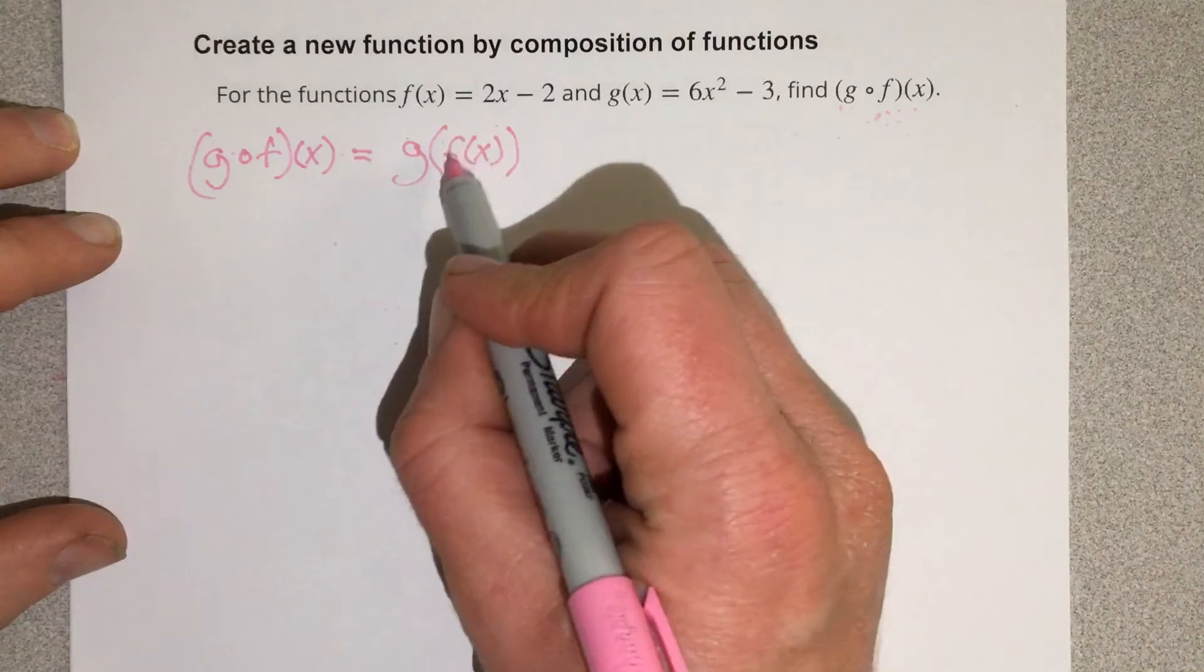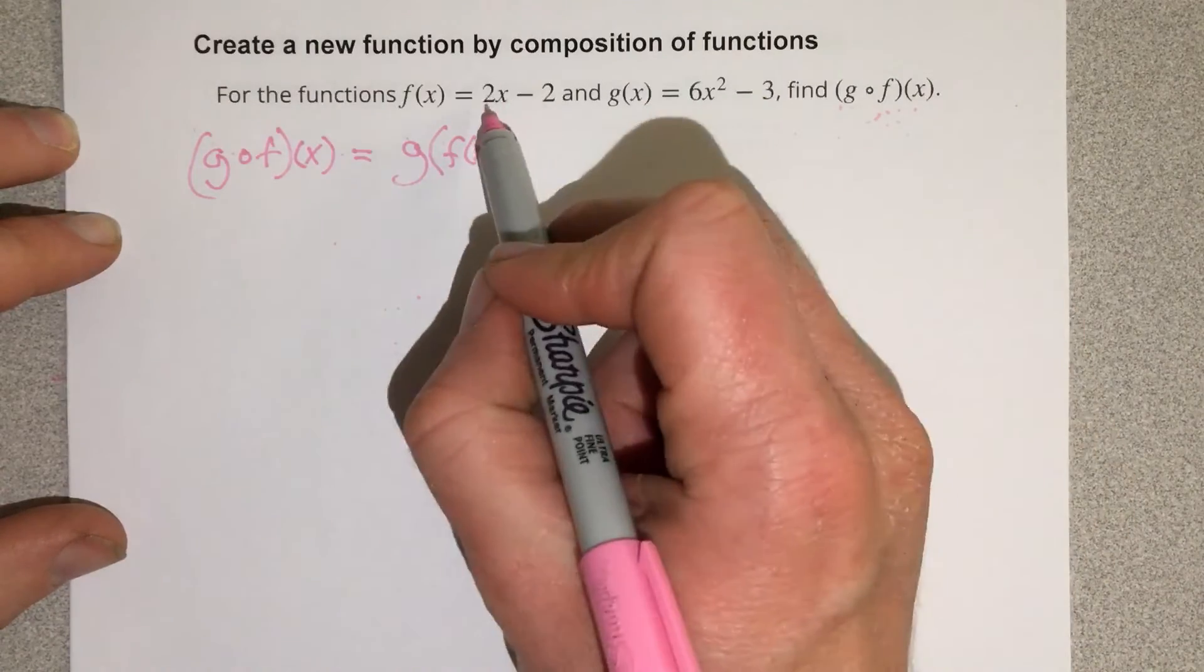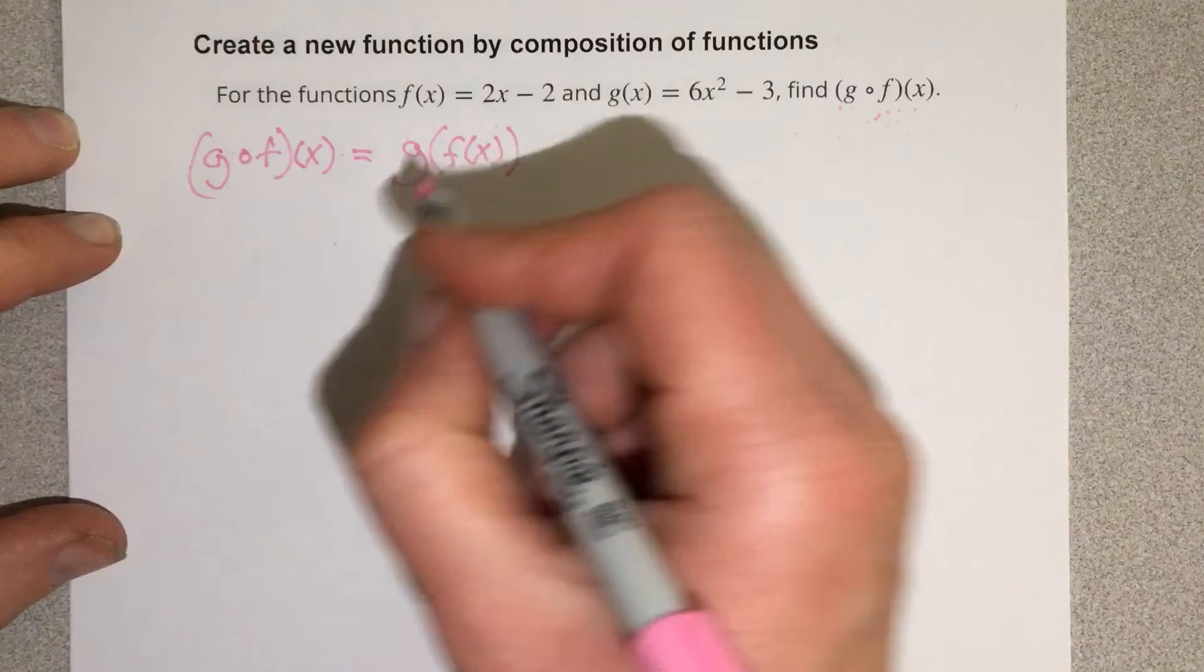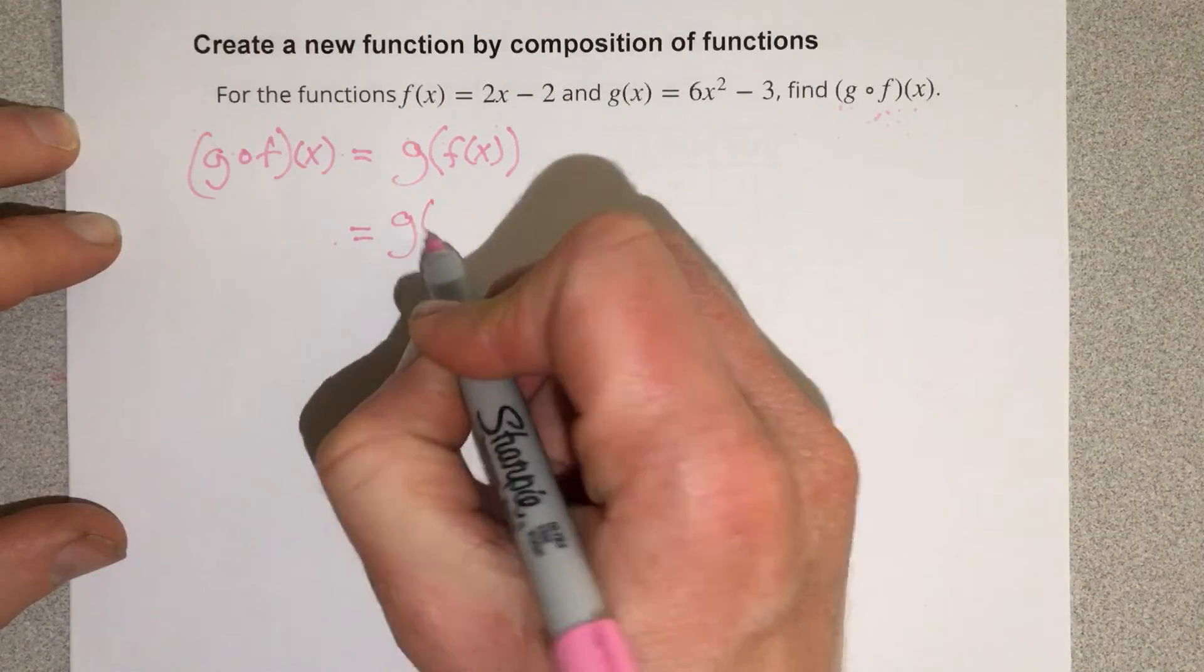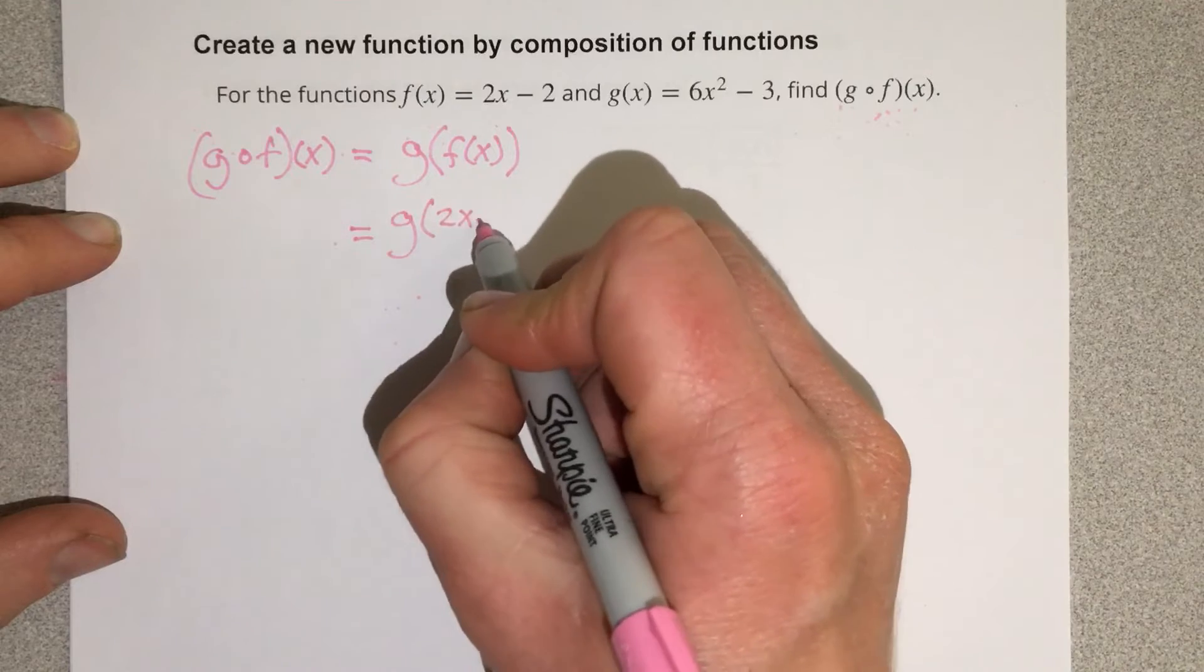Now I'm going to take the f of x function, which is written right here, 2x minus 2, and I'm going to replace it with f of x here. So I get g with an input of 2x minus 2.